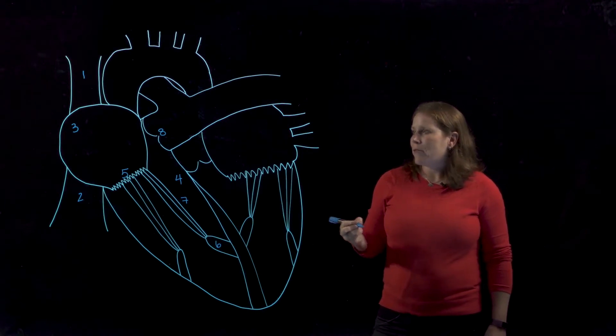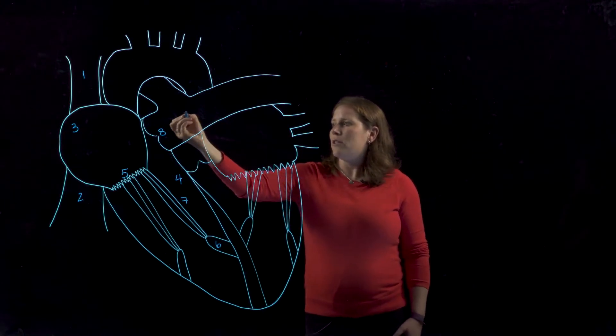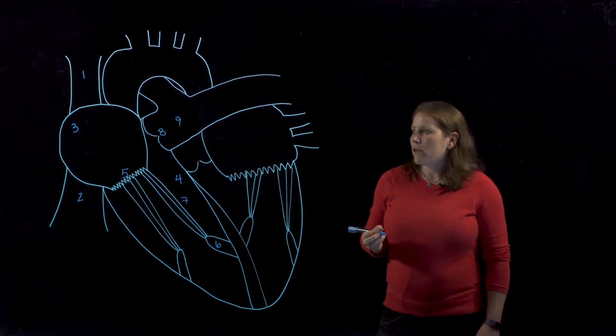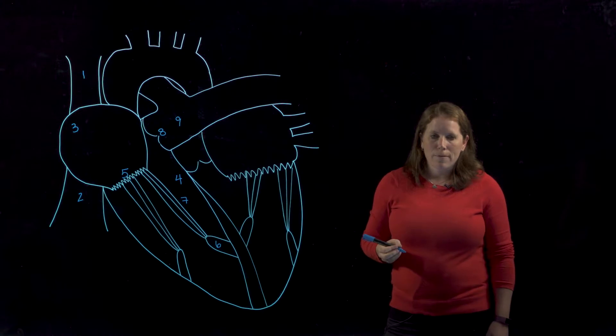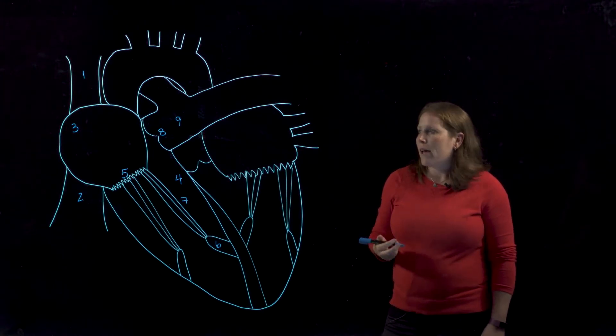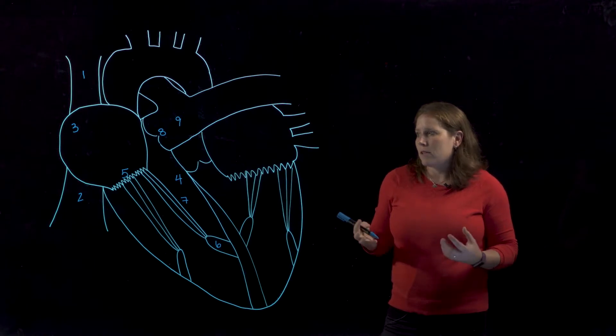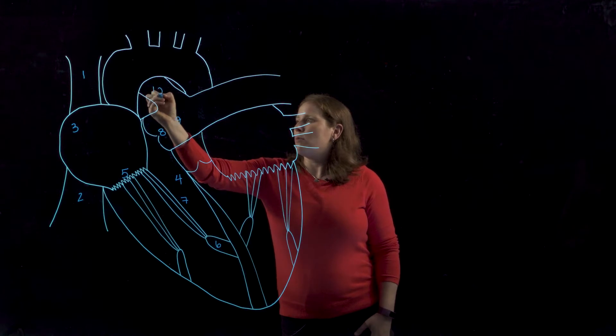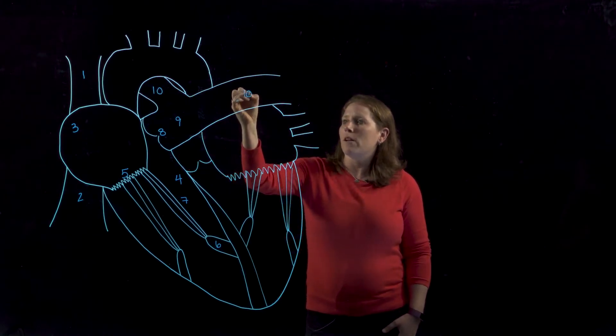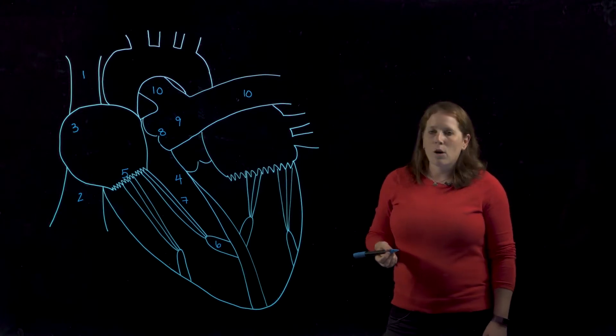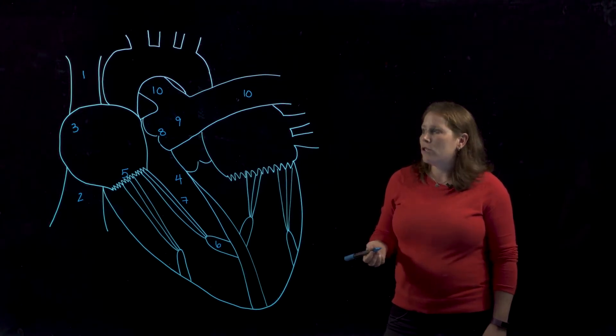The pulmonary semilunar valve allows blood to travel into this region here which is a large singular branch called the pulmonary trunk. Now when we see that term trunk we think of a tree and we know that that means this branch or vessel is going to split again and it does so it splits into both right and left pulmonary arteries. Now these are arteries because they are traveling away from the heart but they do still contain deoxygenated blood.